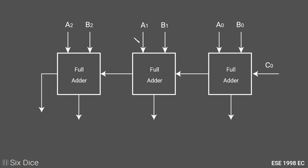Suppose we want to add two 3-bit numbers. A0, A1, and A2 represent the first number; B0, B1, and B2 represent the second number. Starting from the LSB, A0 and B0 are fed into the first full adder, along with the initial carry C0 which is 0. This full adder outputs the first carry C1 and the sum bit S0.